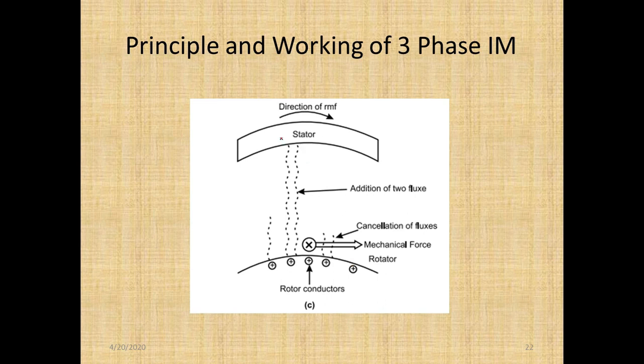See the video, you could clearly understand. On the left side of the rotor conductor, these two fluxes are in same direction, hence they are added up. On the right side, two fluxes are in opposite direction and they tend to cancel each other. So the rotor conductor experiences a mechanical force from the interaction of rotating magnetic field and the flux produced by the rotor conductors.